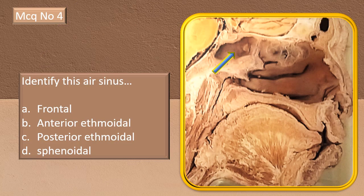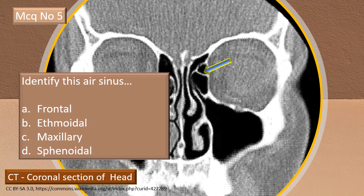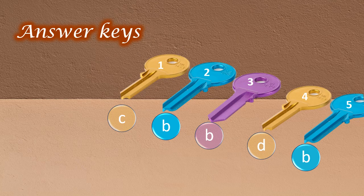MCQ 4: An air sinus is being pointed to directly. Observe its location, size, and immediate relations to identify it — that's the flashing arrow indicating the sinus. Finally, the last MCQ: another sinus has been put for identification. Identify this flashing arrow — it's an air sinus, so half the clue is given. This is a coronal section of the head. Come to your conclusion. Those are the answer keys — go back and forth between questions and answers to re-confirm your responses.